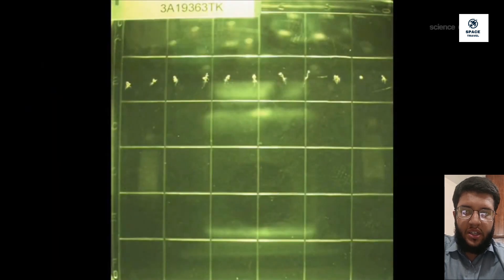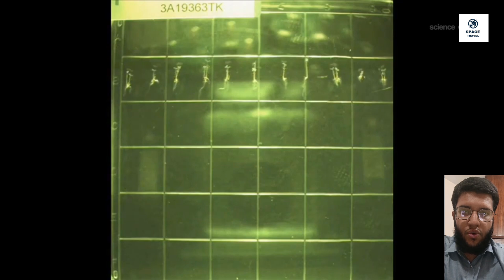We expected to find auxin in the gravity-sensing cells that are at the tip of the root. Instead, it showed up in the hypocotyls.